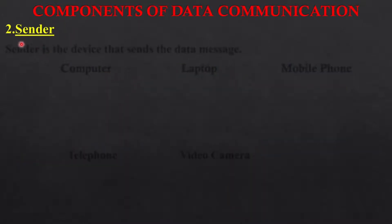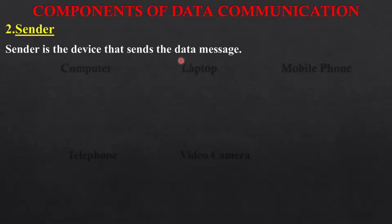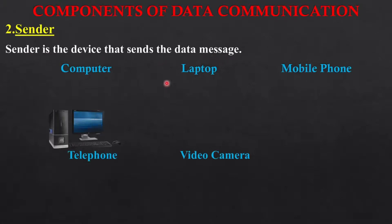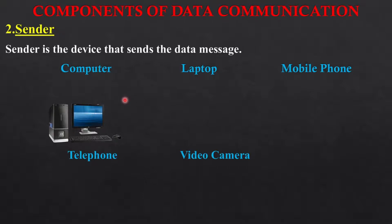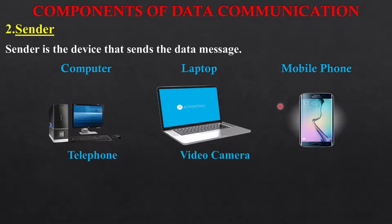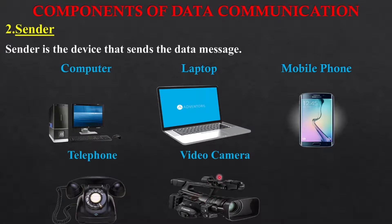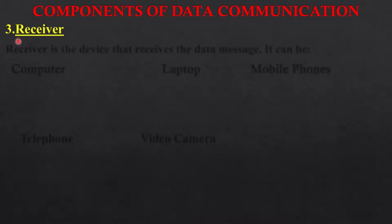Component 2 is sender. Sender is the device that sends the data message in computer networks. The device can be a desktop computer, a laptop, a mobile phone, a telephone, or a video camera — these are all different types of devices which can be used as a sender. So the sender is the source that sends the message.